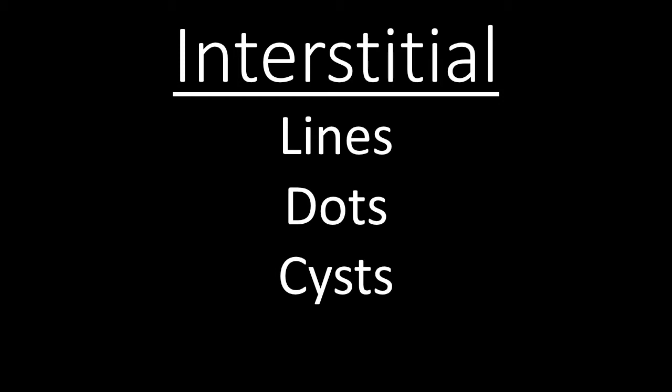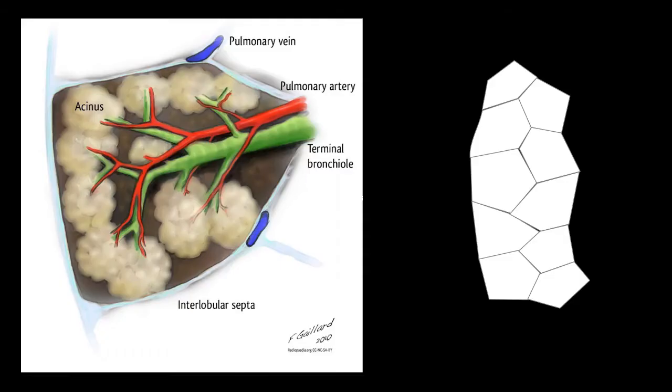When I think about interstitial opacities, I tend to break them down into three simple categories: lines, or thickening of the interlobular septa; dots, or nodules; and cysts.